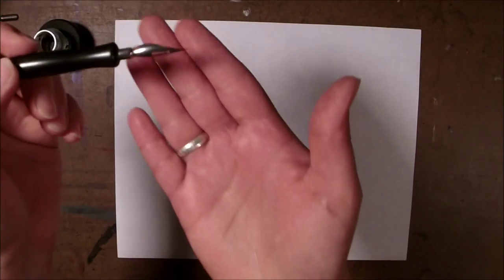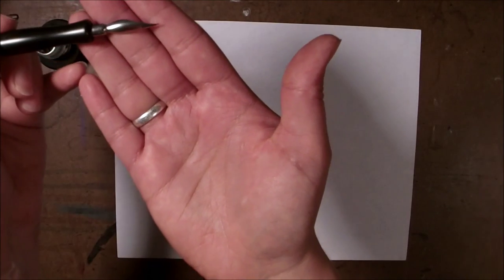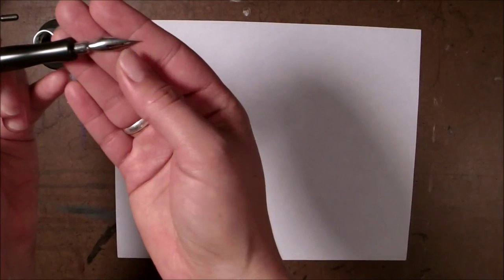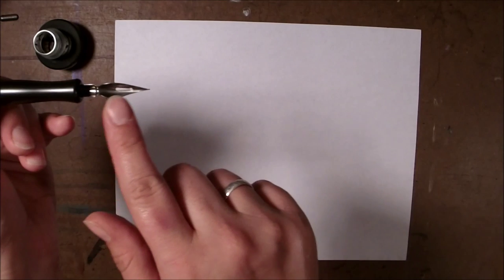So when you dip this in you don't want to dip it in too deep, you want to kind of dip it in probably around where the opening is and the curvature of it should help the ink pull up into it.